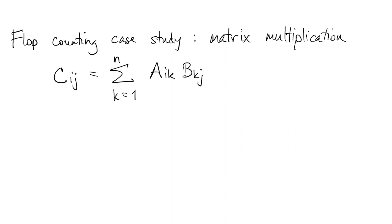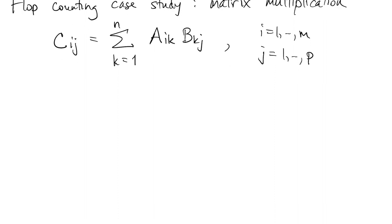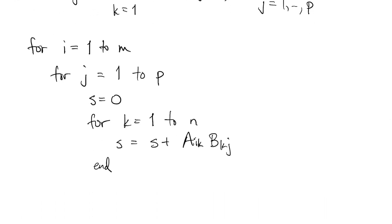So here's a case study in flop counting, multiplication of two matrices. So we have the inner product formula for the product of A and B. So each entry is an inner product, which is a sum of products. And C has M by P entries. So we could write a little pseudocode for this with nested loops. For the inner product, we'll do a little accumulator pattern. So you see, all the flops are contained in this innermost line. And there are two flops, one multiplication and one addition.